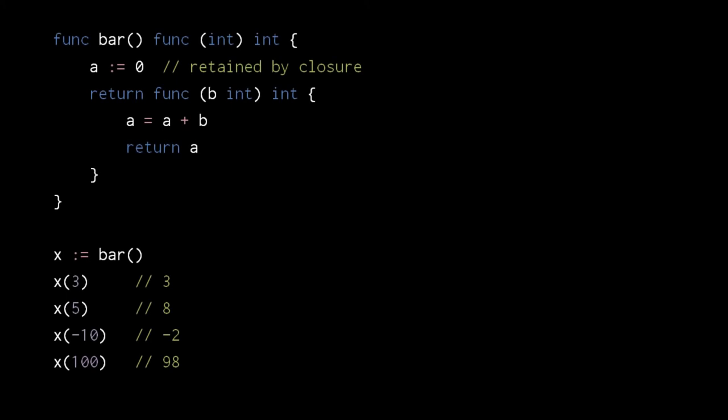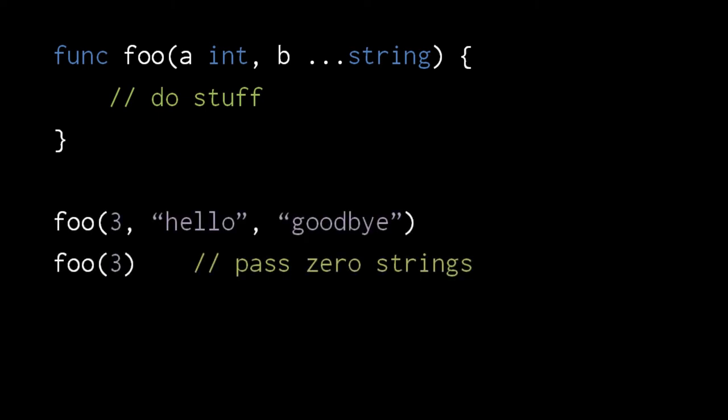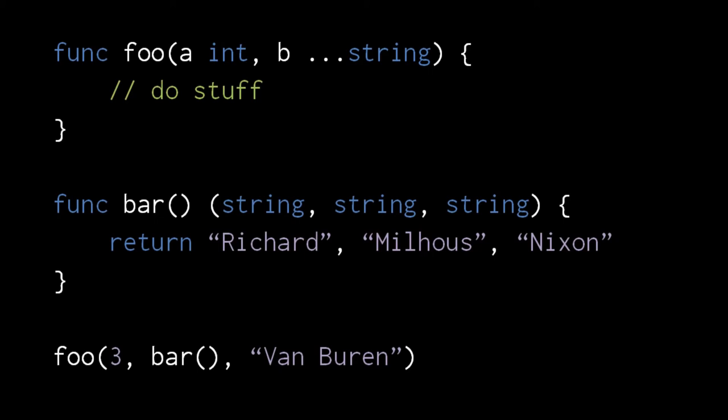Like in JavaScript, an inner function can retain access to local variables from enclosing scopes. Here for example bar returns a function which retains access to the local variable a of bar. So when we invoke this returned function multiple times, the same variable a is used for each call. If we call bar a second time we get back a function with the same code but with a separate variable a, so calls to x and y here are using a different variable a. A variadic function is a function that takes a variable number of arguments. In Go the last parameter of a function can be a slice specially denoted by three dots instead of square brackets. The arguments for this parameter are zero or more elements which get passed as a slice. If a function returns multiple values, the function can be used to provide arguments to a variadic function if the return values all match the expected type.